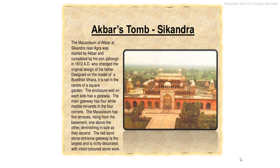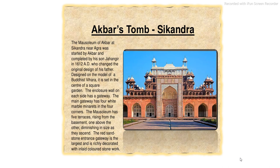The mausoleum of Akbar at Sikandara near Agra was started by Akbar and completed by his son Jahangir in 1612. Jahangir changed the original design of his father. Designed on the model of a Buddhist Vihara, Akbar's tomb at Sikandara is set in the center of a square garden. The enclosure wall on each side has a gateway. The main gateway has four white marble minarets in the four corners. The mausoleum has five terraces rising from the basement, one above the other, diminishing in size as they ascend. The red sandstone entrance gateway is the largest and richly decorated with inlaid colored stonework.